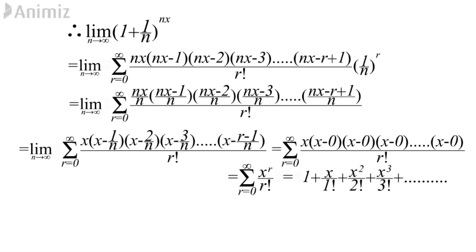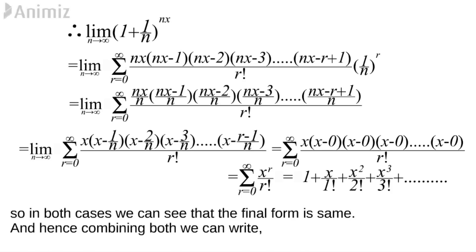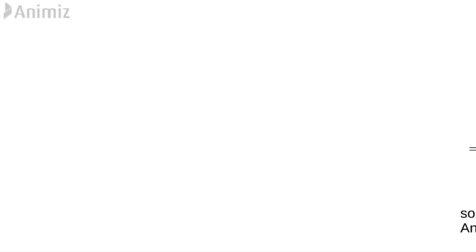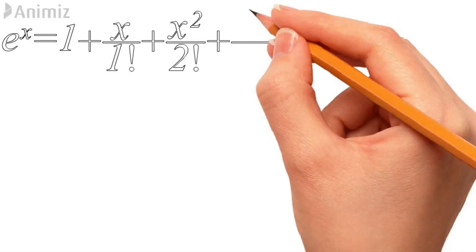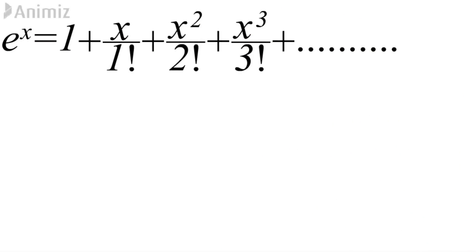Notice something: for x as a positive integer and for x not a positive integer, we get the same result. Combining both, we can write e^x = 1 + x/1! + x²/2! + x³/3! + ... up to infinite terms. This is the famous polynomial form of e^x, and since it is defined whether x is a positive integer or not, this form is applicable for all real values of x.